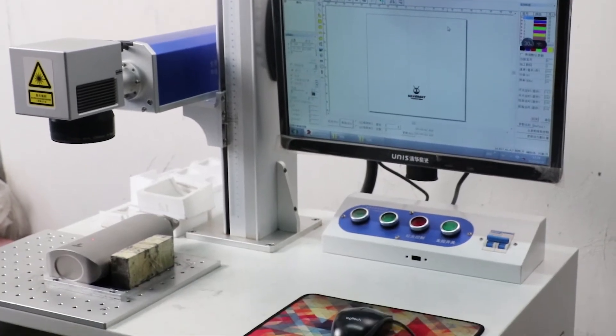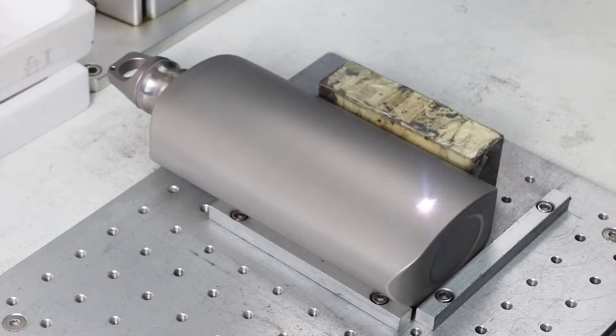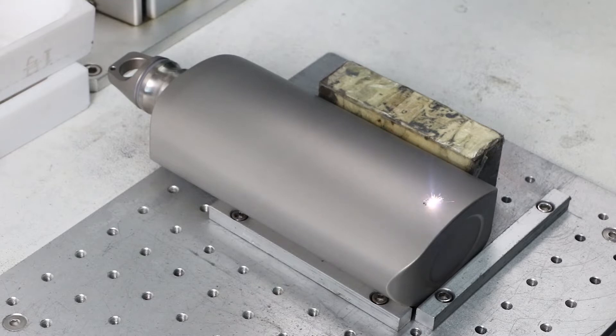The last stage of our production process before packaging is adding the Silver Ant brand logo to our products. To do this, we use laser engraving to ensure the highest quality logo and product finish.